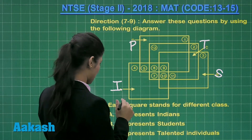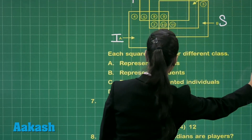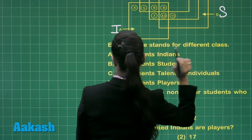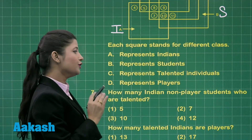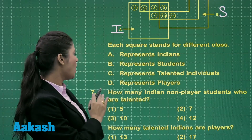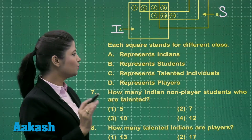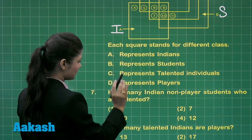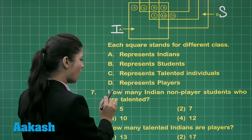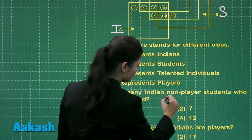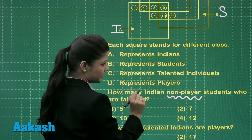Let us move on to question number 7. This question asks: how many Indian non-player students who are talented? You have to consider Indians and non-player students who are talented, which means you are excluding the players.